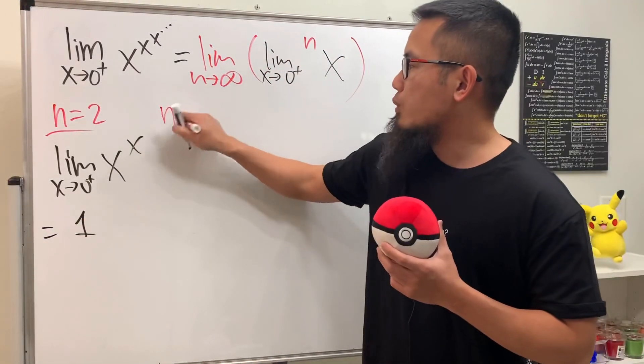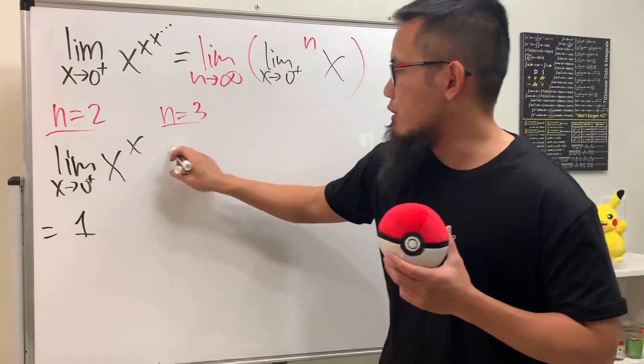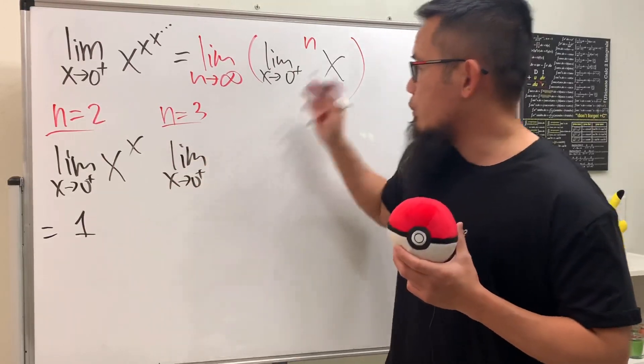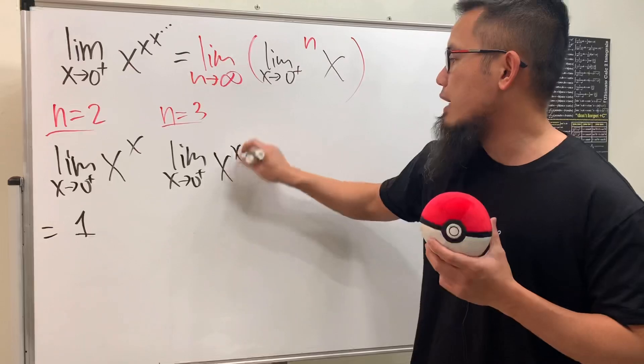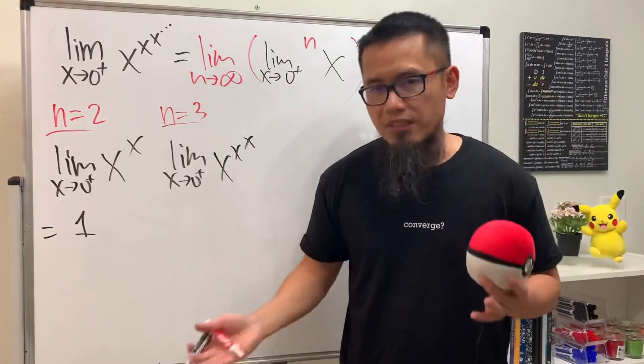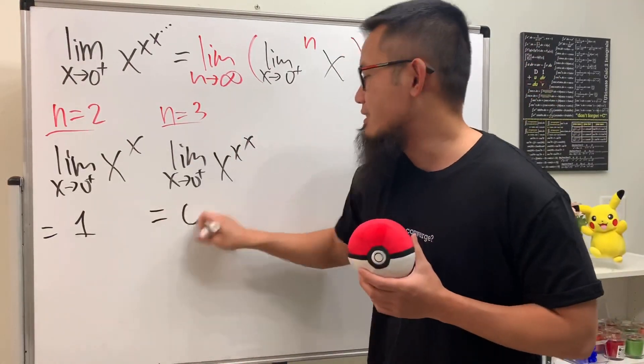Next, when n equals 3, we have the limit as x goes to zero plus of x to the x to the x. This is also really famous - the answer is equal to 0.